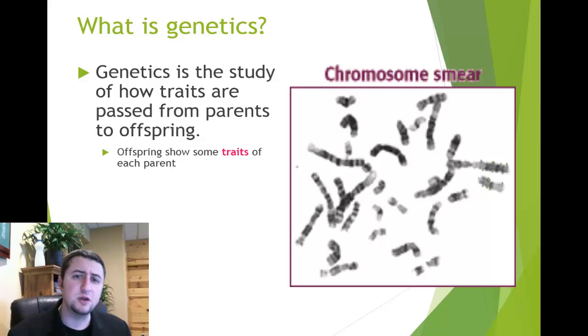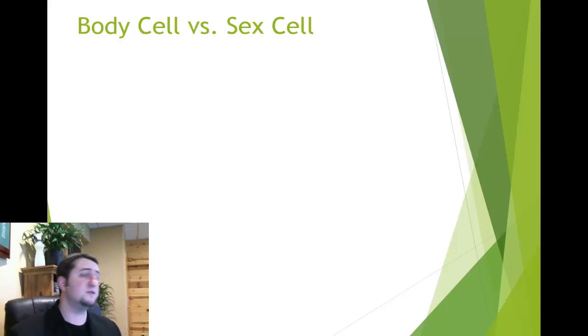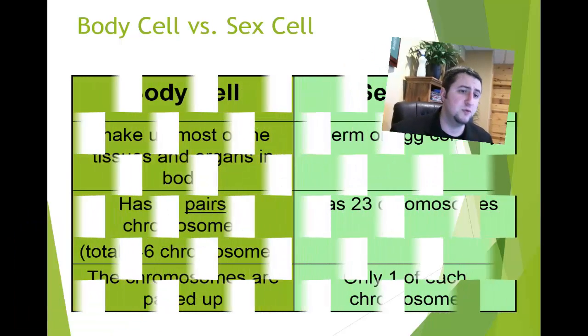Offspring generally show traits that are similar to each parent, and traits are passed from parents to offspring by using these things called sex cells. We learned about those a few units ago. Let's go ahead and review them.